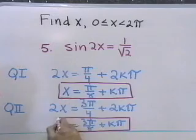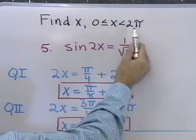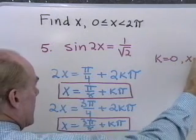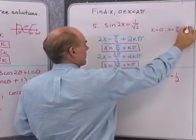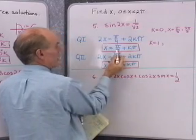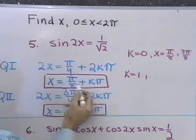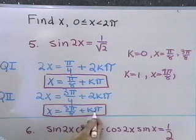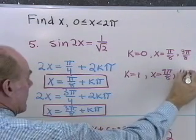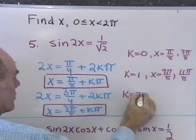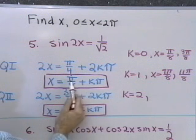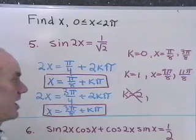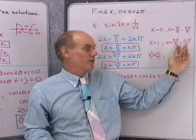Substituting k equals 0 gives x equals pi over 8 and x equals 3 pi over 8. Substituting k equals 1 gives pi over 8 plus pi equals 9 pi over 8, and 3 pi over 8 plus pi equals 11 pi over 8. For k equals 2, both values exceed 2 pi, so we stop. The four solutions between 0 and 2 pi are pi over 8, 3 pi over 8, 9 pi over 8, and 11 pi over 8.